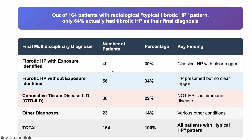I put this data through Claude, an AI LLM, to better understand it. Out of 164 patients with a CT diagnosis of typical fibrotic HP: 30 had fibrotic HP with exposure identified, 34 had fibrotic HP without exposure, 22% (36 patients) had CTD-ILD, and 14% (23 patients) had another diagnosis. This means that when we call it typical fibrotic HP on CT, only about 64% — roughly two-thirds — actually have fibrotic HP as their clinical diagnosis. One-third have other diagnoses.